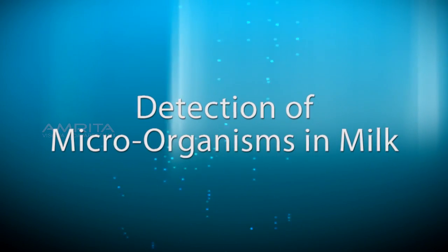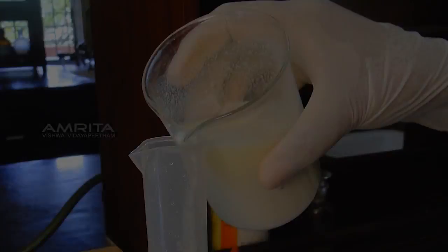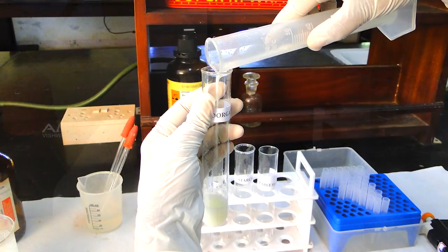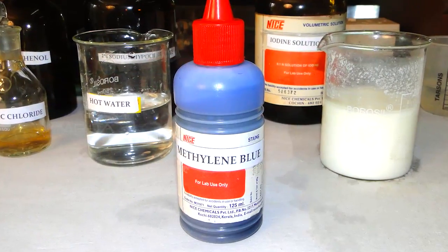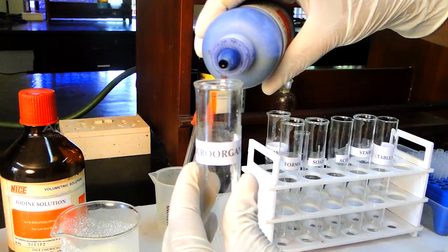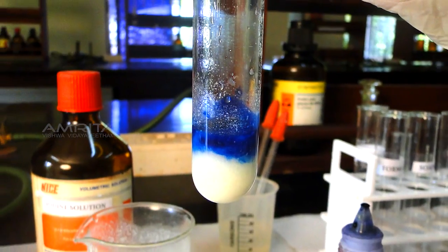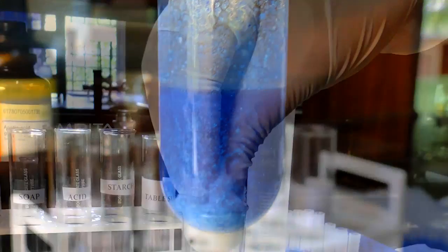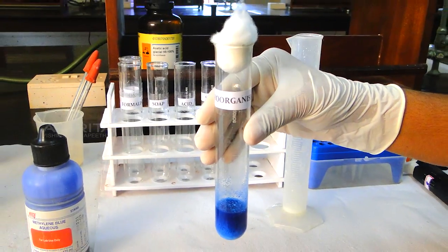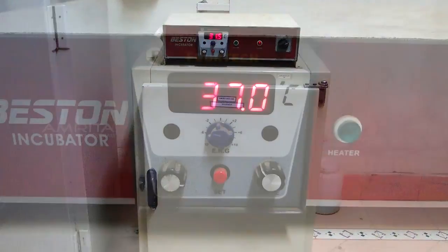Detection of microorganisms in milk. Pour 10 ml milk from the beaker into the test tube labeled microorganism. Add 8 to 10 drops of methylene blue into the test tube containing milk and mix the contents well. The color of the milk solution turns blue. Close the test tube using a cotton ball and keep it in the incubator for 30 minutes at 37 degrees Celsius.